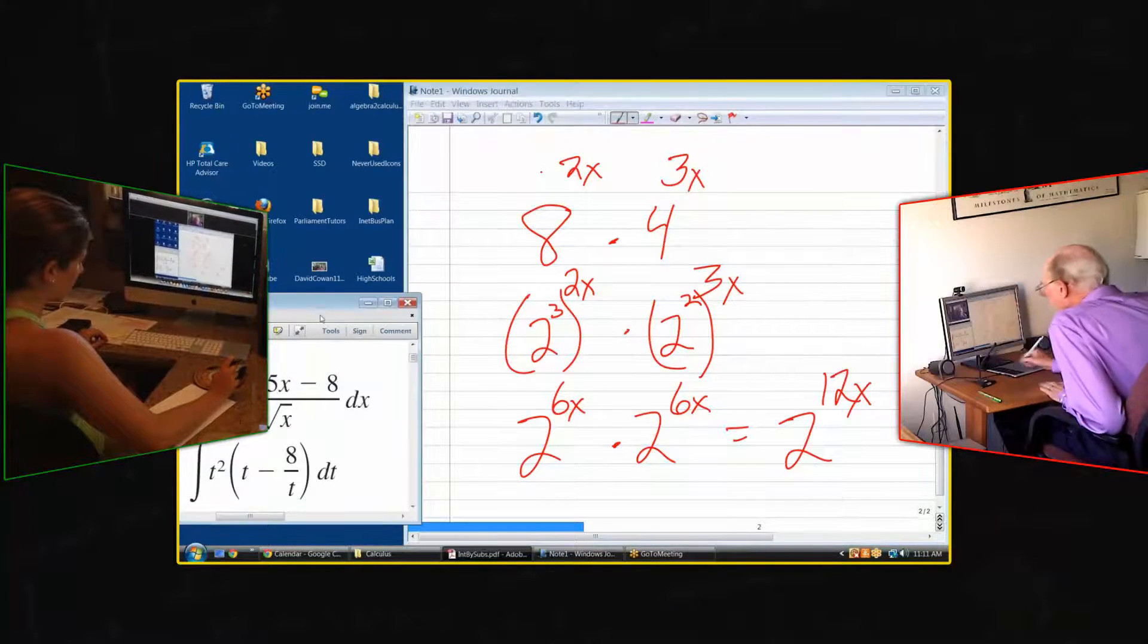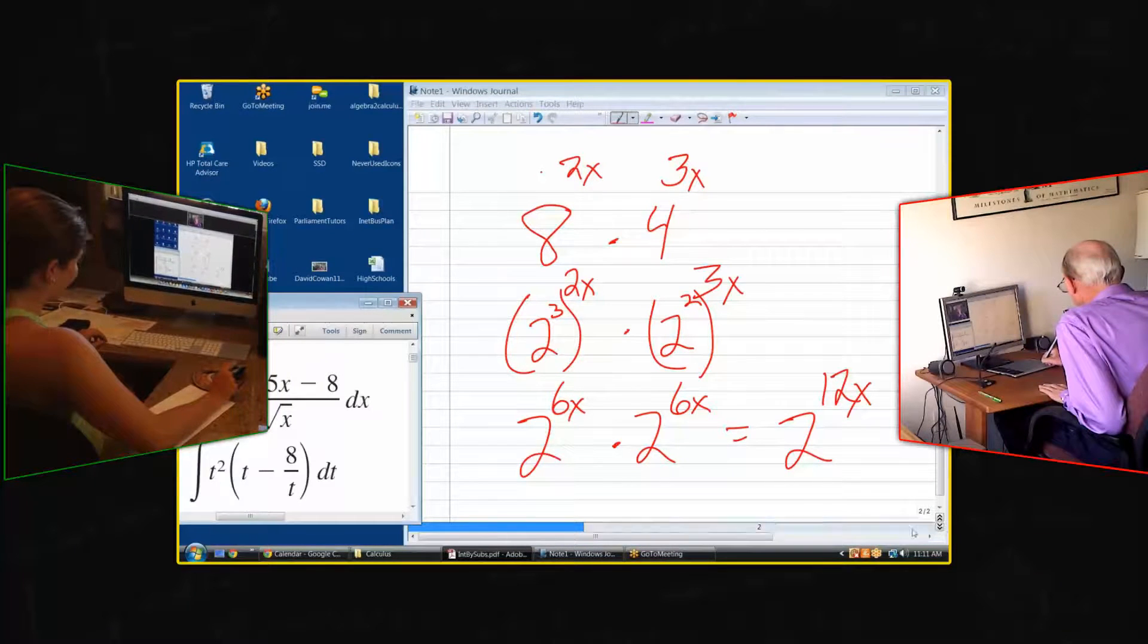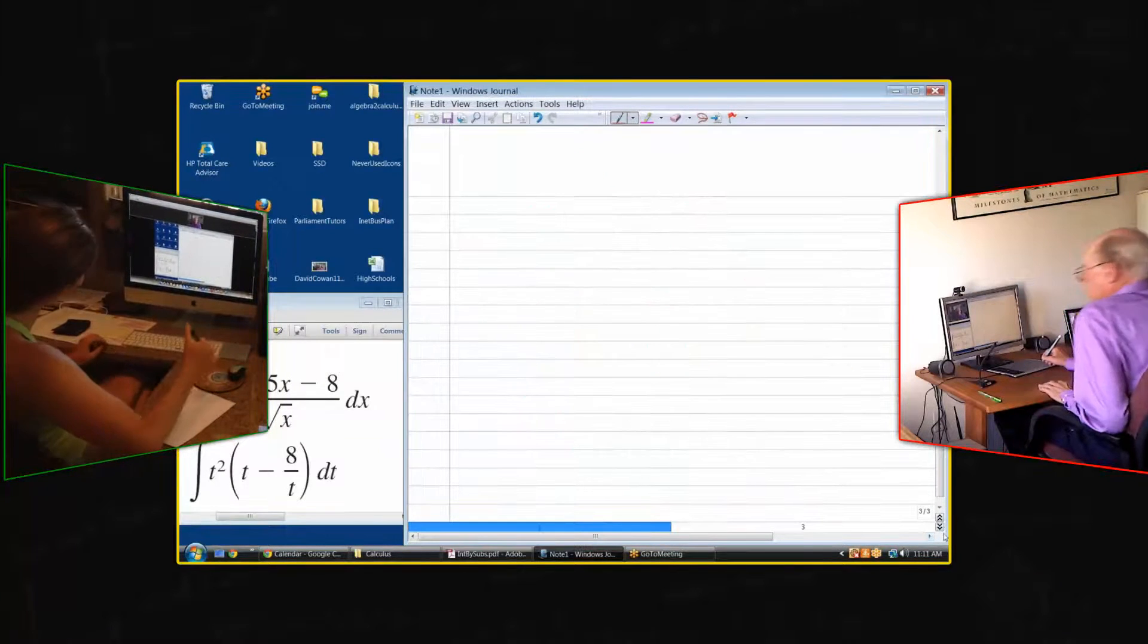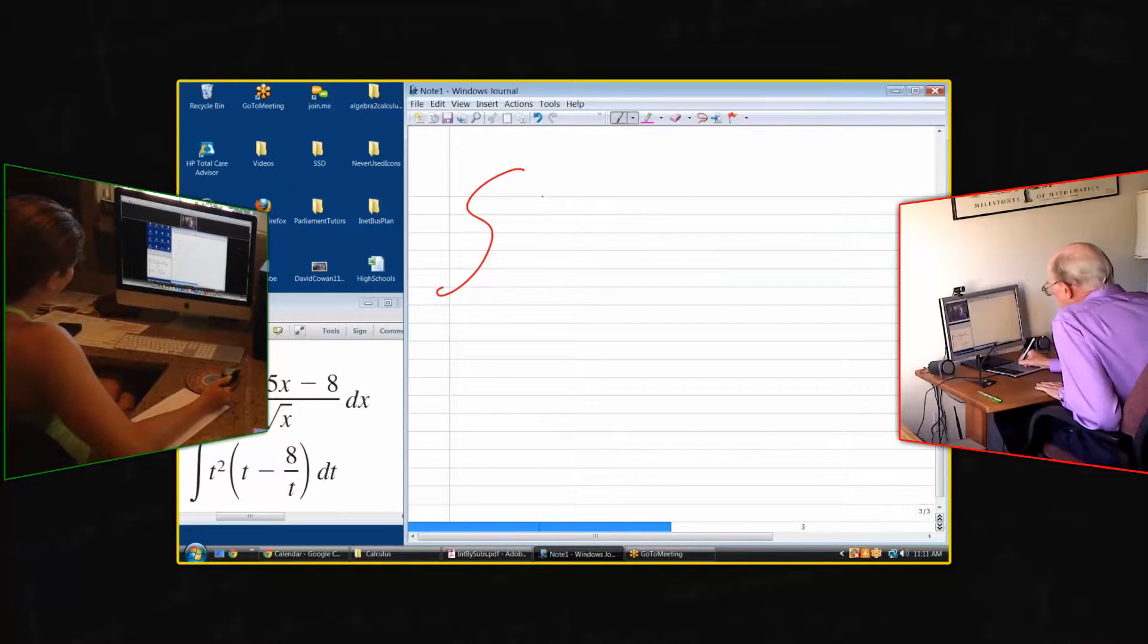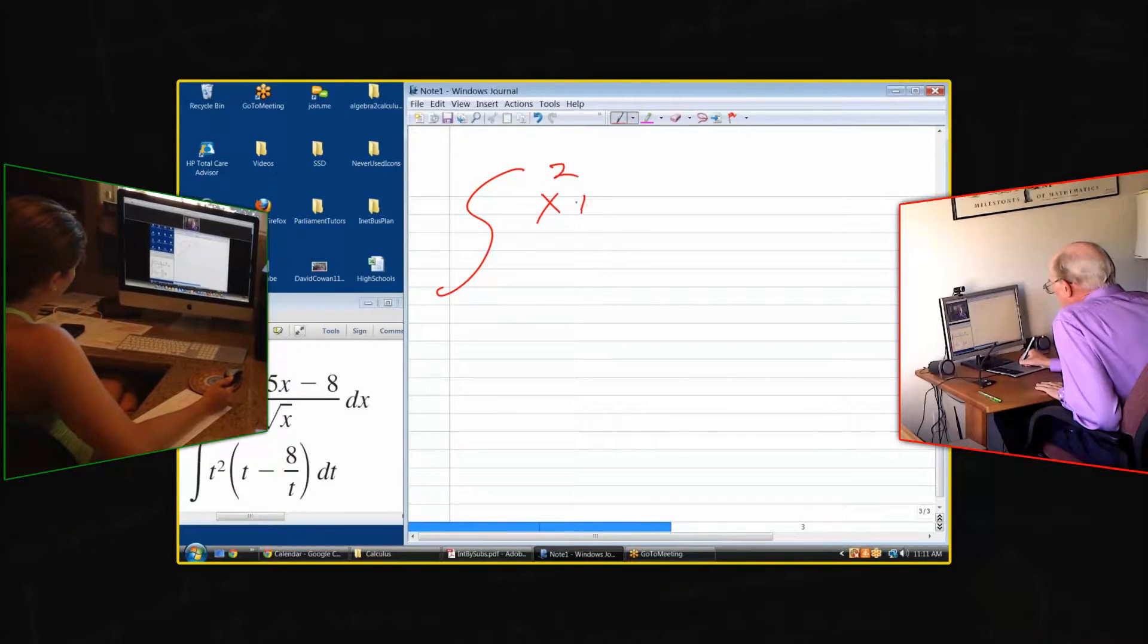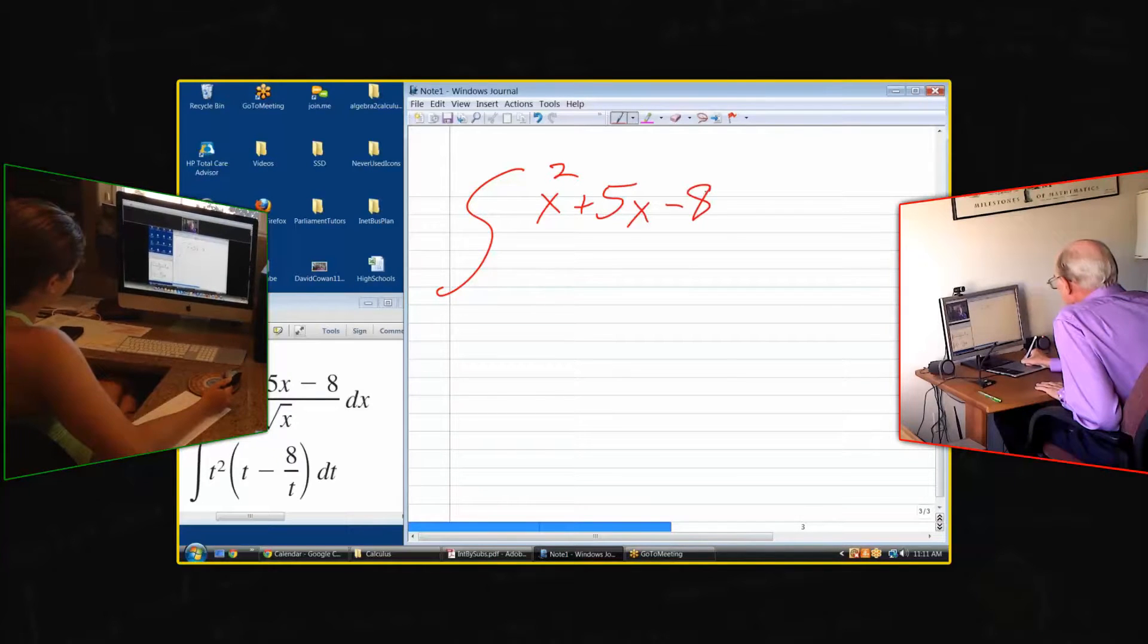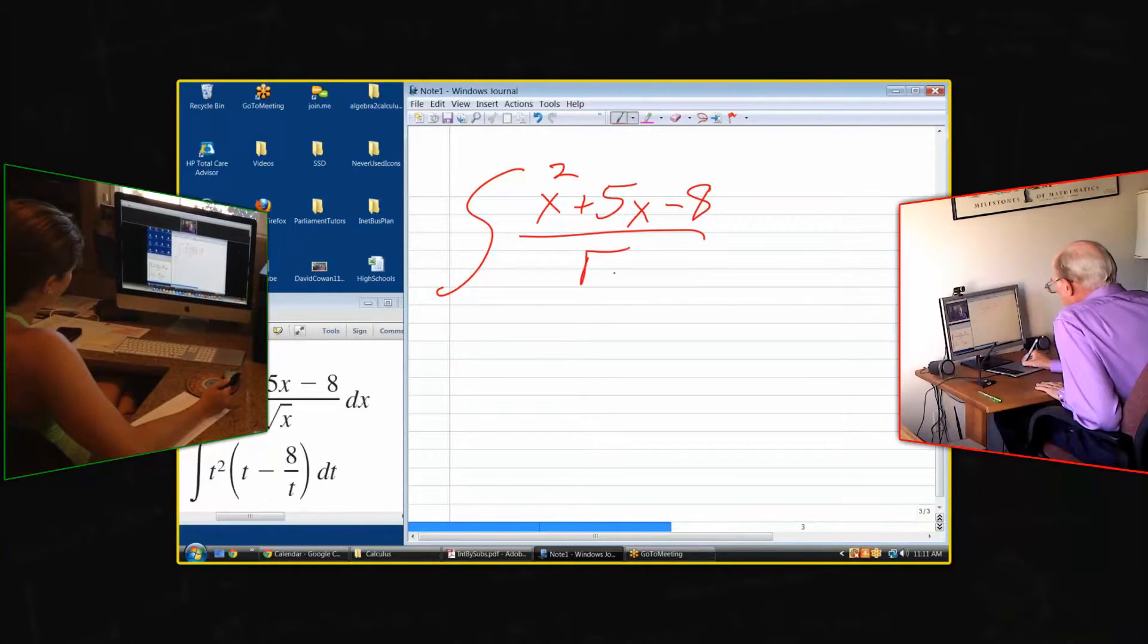Let's have a look at this integral over here. Oh boy. The integral of x squared plus 5x minus 8 divided by square root of x dx. What's the first step?